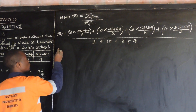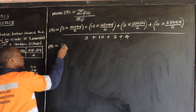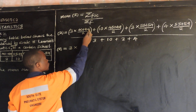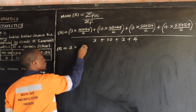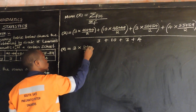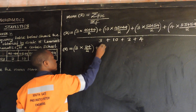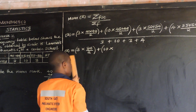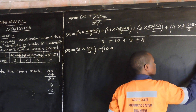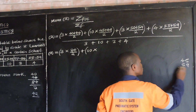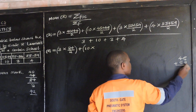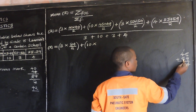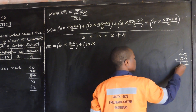Then we move on and say x-bar, which is our mean, is equal to 3 multiplied by — now add these two: 40 plus 44. So 4 plus 0 gets 4, 4 plus 4 gets 8, so we get 84 divided by 2. Plus 10 multiplied by — now add 45 plus 49: 9 plus 5 gives 14, carry 1, 4 plus 4 gives 8 plus 1 gives 9, so we get 94 over 2.